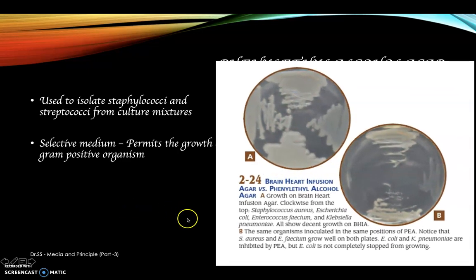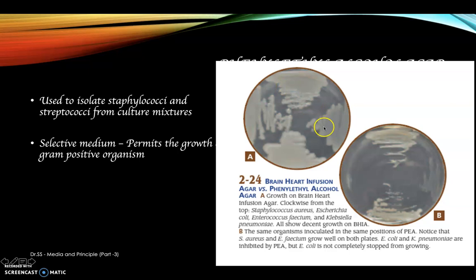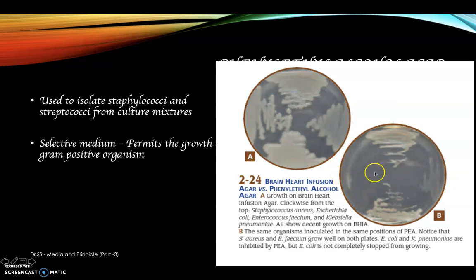In this medium we can add fibrinated blood. There are two plates: brain heart infusion agar and phenylethyl alcohol agar. In brain heart infusion agar, four organisms are streaked — Staphylococcus aureus, E. coli, Enterococcus, and Klebsiella. The same organisms are streaked on the phenylethyl alcohol agar, but no growth was observed for E. coli and Klebsiella.